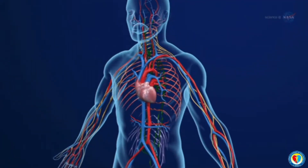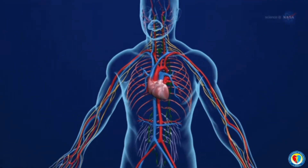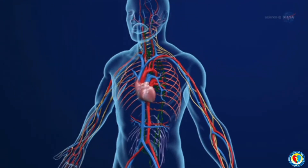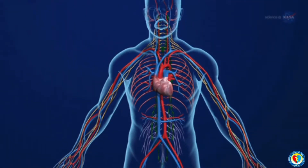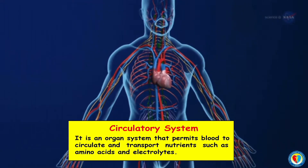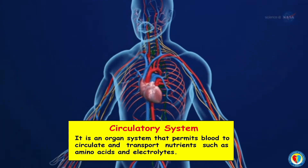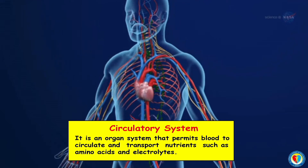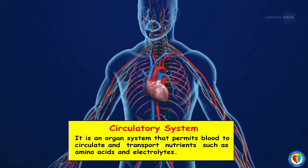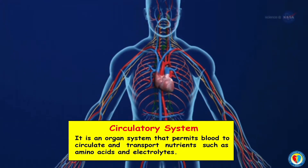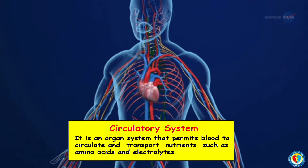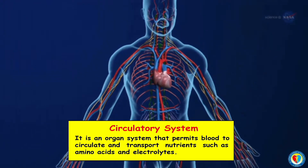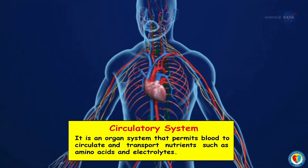One of the systems in our body is the circulatory system. The circulatory system is also called the cardiovascular system or the vascular system. It is an organ system that permits blood to circulate and transport nutrients such as amino acids and electrolytes, oxygen, carbon dioxide, hormones, and blood cells to and from the cells in the body.